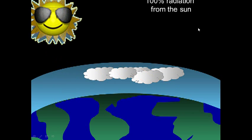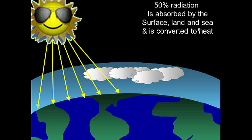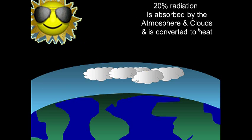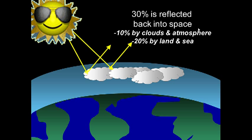Let's say 100% of radiation comes from the Sun. Fifty percent is absorbed by the surface — land and sea — and converted into heat. Twenty percent is absorbed by our atmosphere and clouds, also converted into heat, giving us 70% total absorbed by land, water, air, and clouds. The remaining 30% is reflected back into space: 10% by clouds and 20% by land and sea.